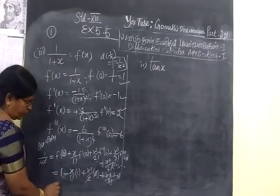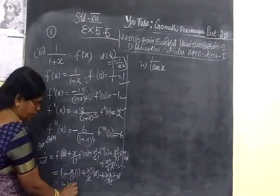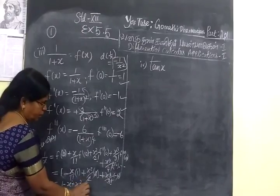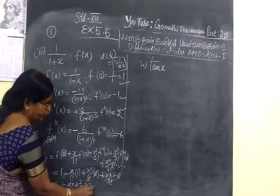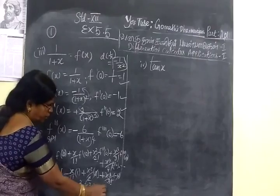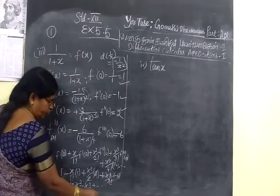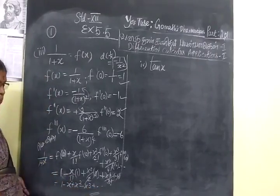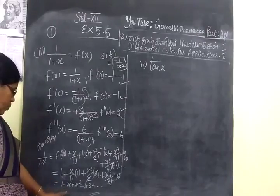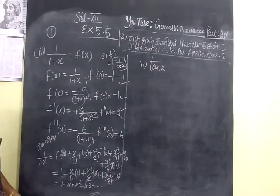Here you can write 1 minus x plus x square. Then minus x cube. Then plus etc. And so on. This was the 1 by 1 plus x part of the square. Now you will see the next one.